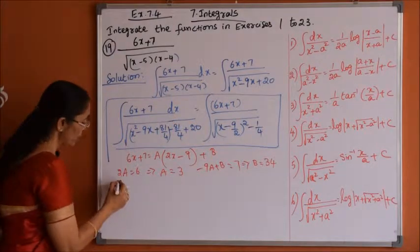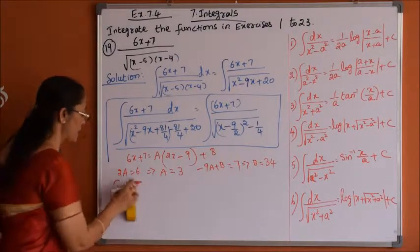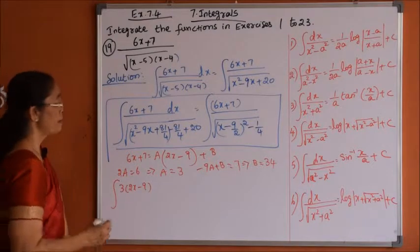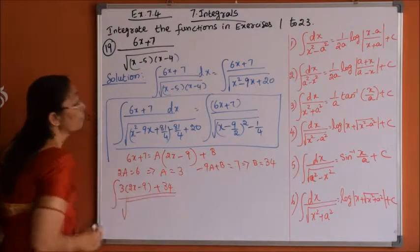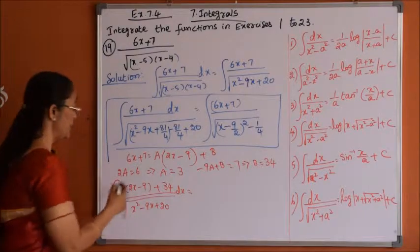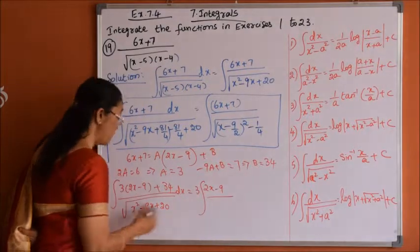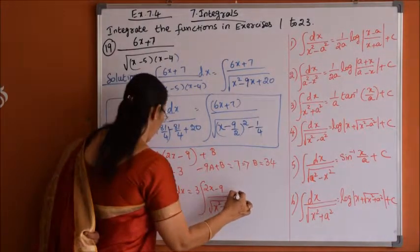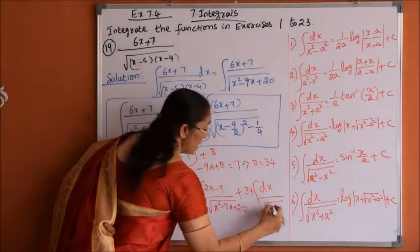The integration now changes: 6x + 7 can be written as 3 times (2x minus 9) plus 34, all divided by root over (x squared minus 9x plus 20) dx. This splits into two integrals: 3 times the integration of (2x minus 9) over root over (x squared minus 9x plus 20) dx, plus 34 times the integration of dx over root over (x squared minus 9x plus 20).